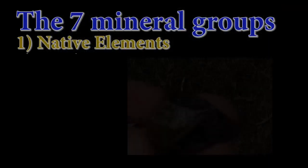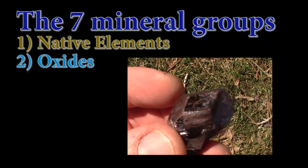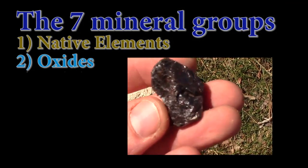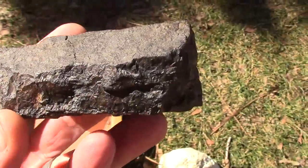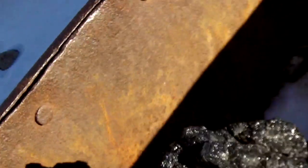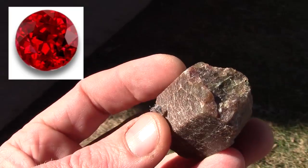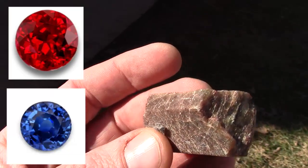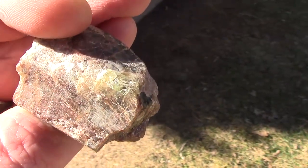The next group is the oxide minerals, such as the common iron oxides hematite or magnetite, and common rust is often limonite. Ice is an oxide mineral of hydrogen, and rubies and sapphires belong to the aluminum oxide group known as corundum.